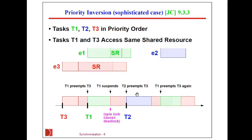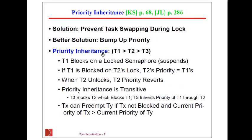When task three finishes with use of the shared resource — the locked resource — task one will unblock and it will have priority over task two. That's how it prevents the priority inversion.